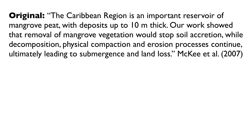Here's another example from McKee et al., 2007. The original text states: The Caribbean region is an important reservoir of mangrove peat with deposits up to 10 meters thick. Our work showed that removal of mangrove vegetation would stop soil accretion while decomposition, physical compaction, and erosion processes continue.